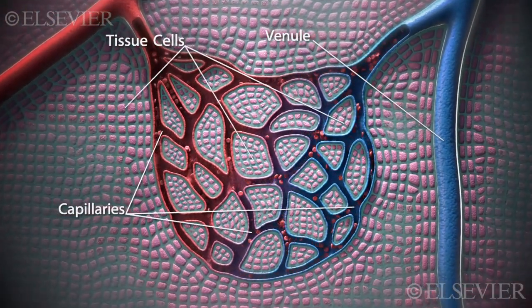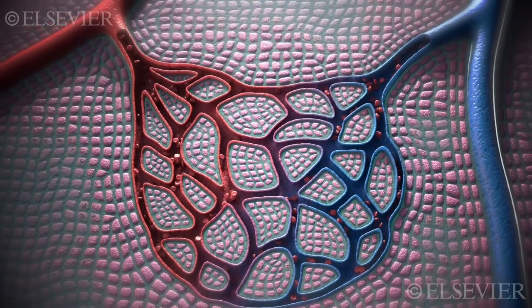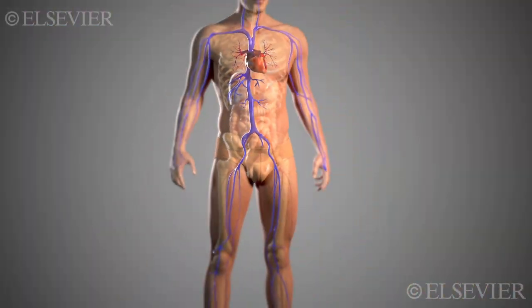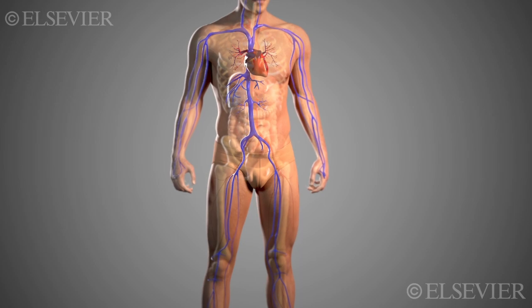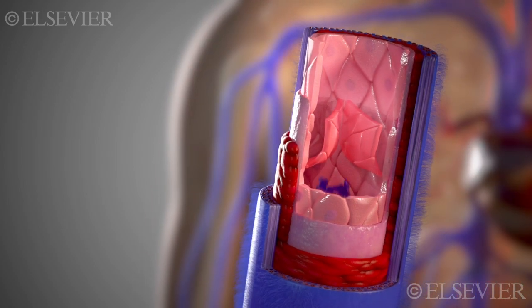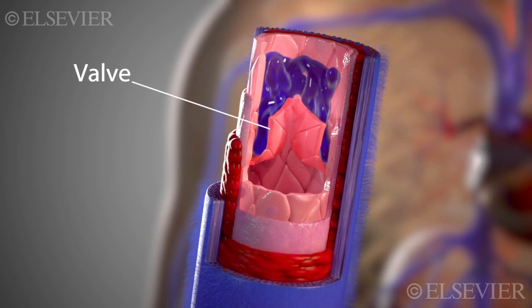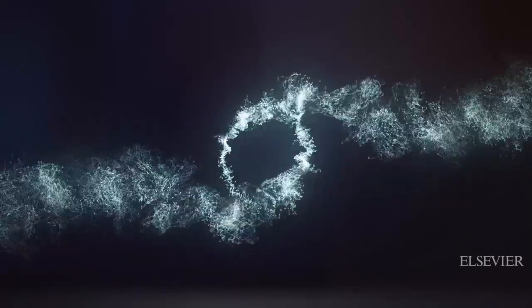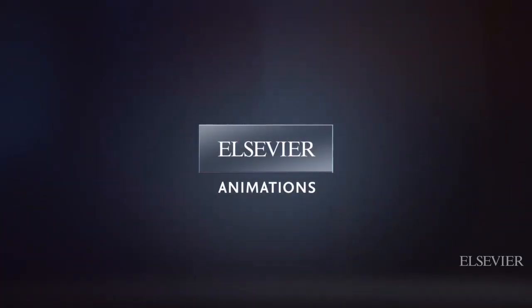Venules are tiny veins that connect capillaries to veins. Veins stretch to accommodate varying amounts of blood as they return it to the heart. The veins also have valves that prevent the backflow of blood.